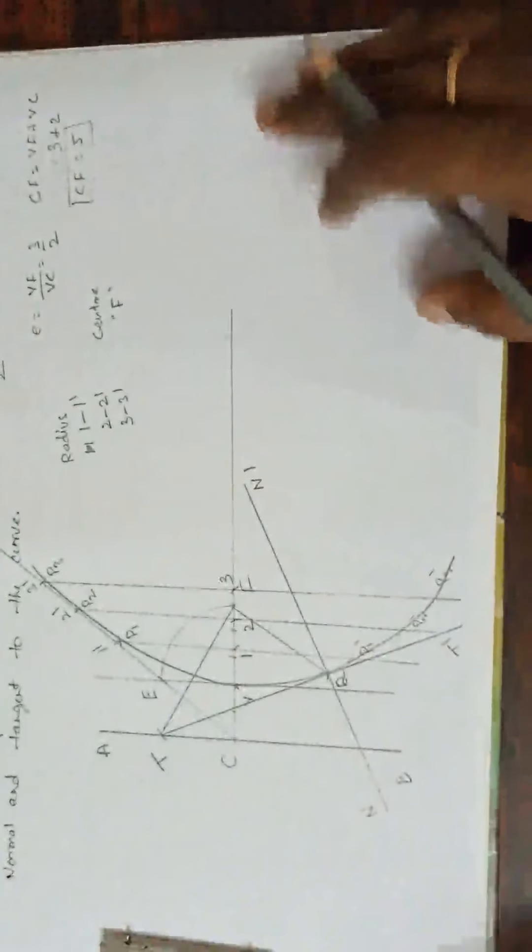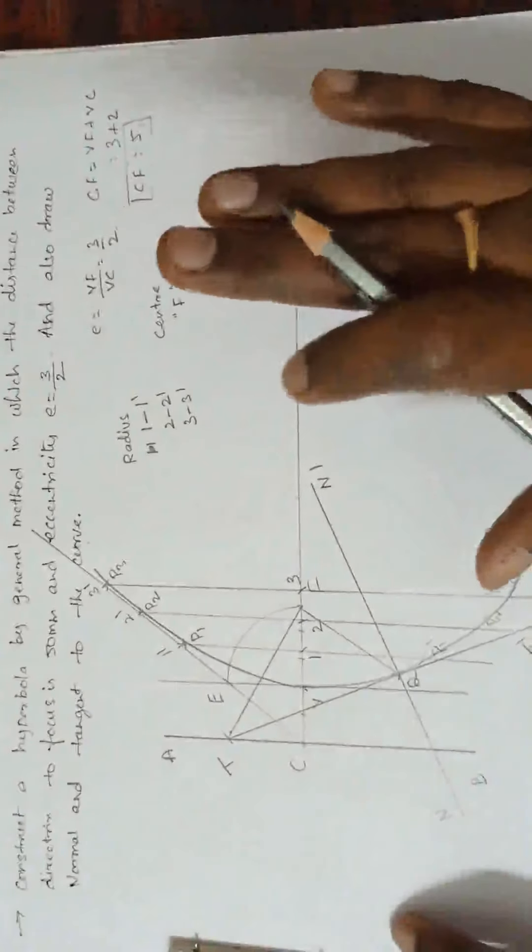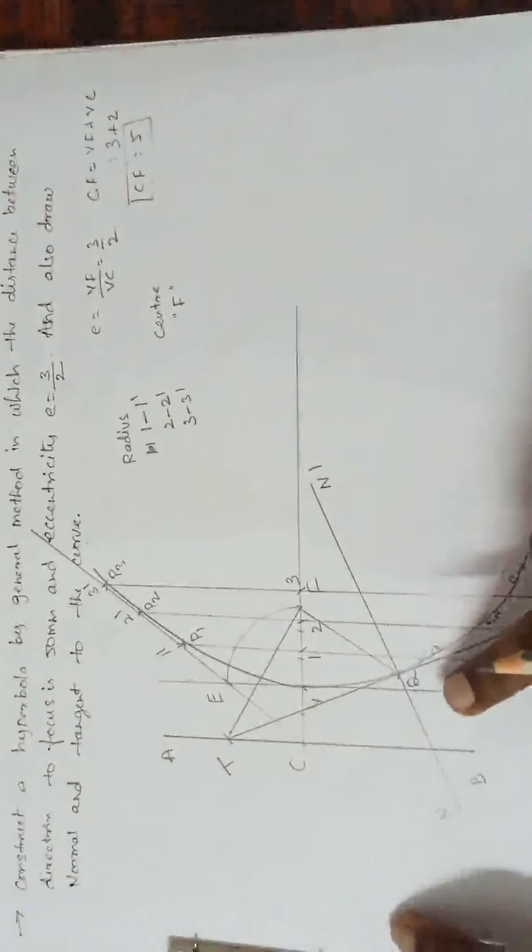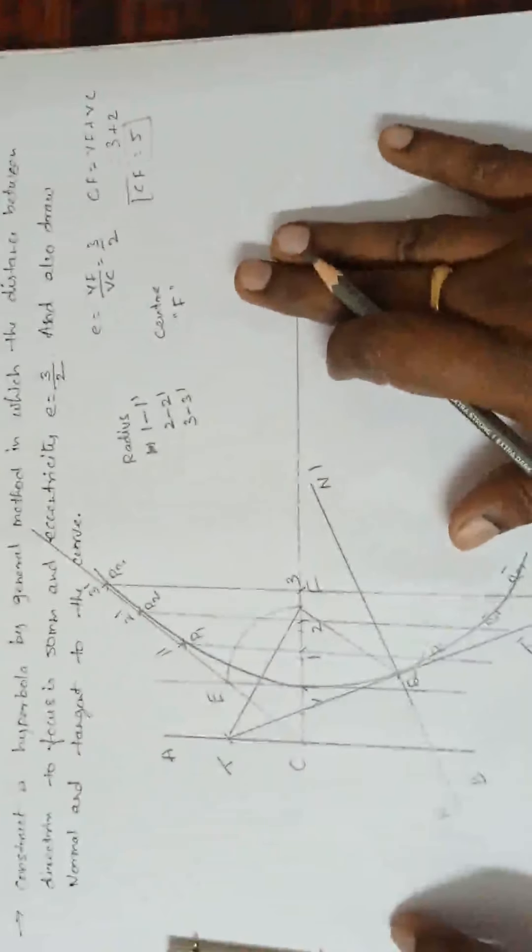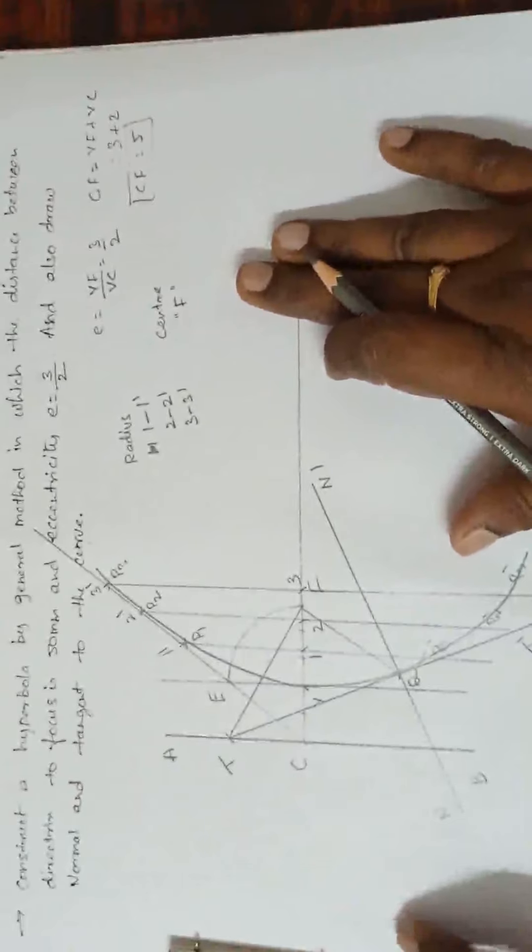So, in this way, we have drawn what? Ellipse. Sorry. In this way, we have drawn the hyperbola and also normal and tangent. So, we have drawn hyperbola here. Thank you very much. I hope you have understood.